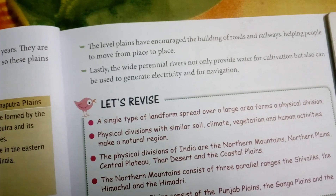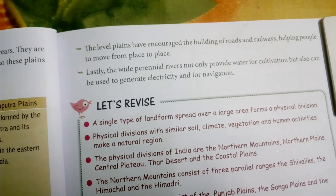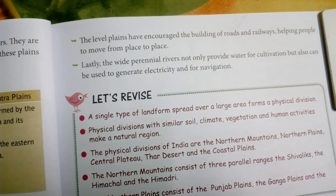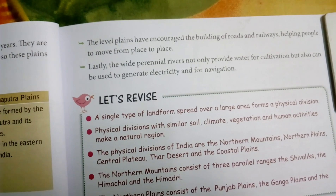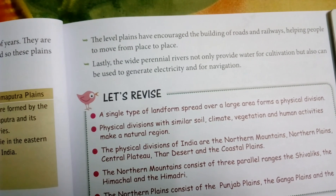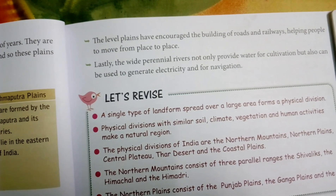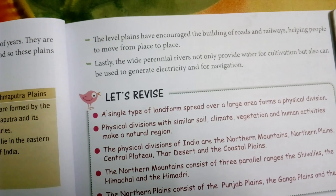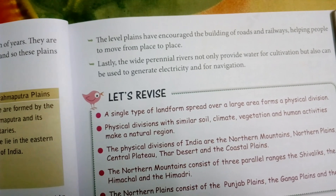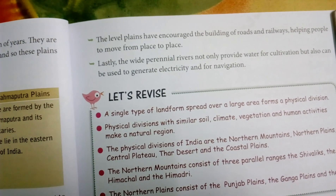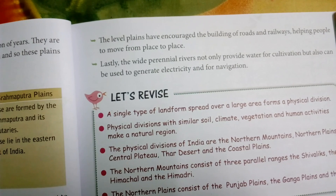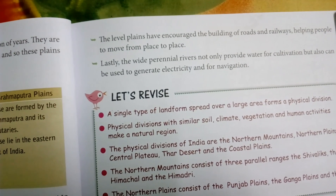The wide perennial rivers not only provide water for cultivation, but can also be used to generate electricity and for navigation. For example, the river Ganga has water throughout the year, making it a perennial river whose water is used for farming, generating electricity, and navigation.